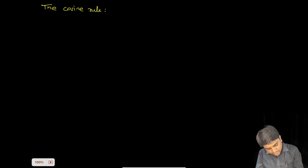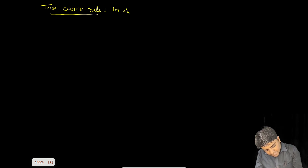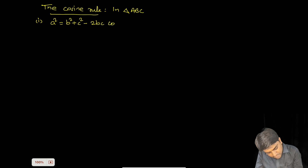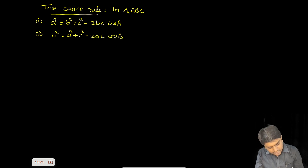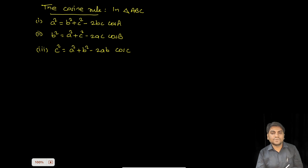The cosine rule — in triangle ABC: first, a² = b² + c² − 2bc cosA; second, b² = a² + c² − 2ac cosB; and third, c² = a² + b² − 2ab cosC. So we have to prove these.